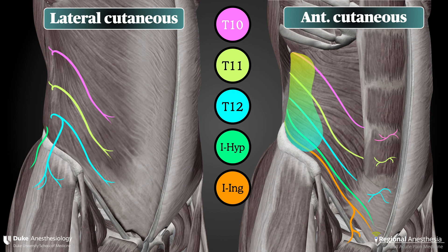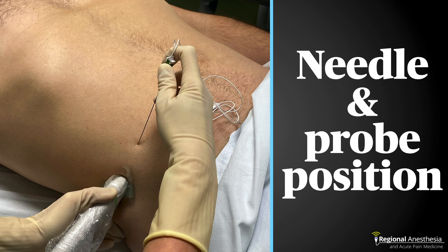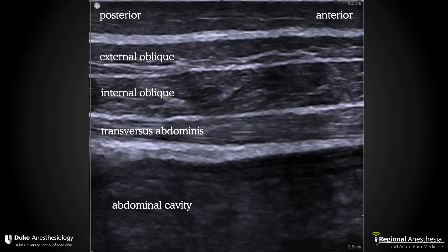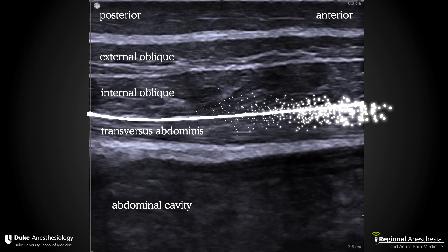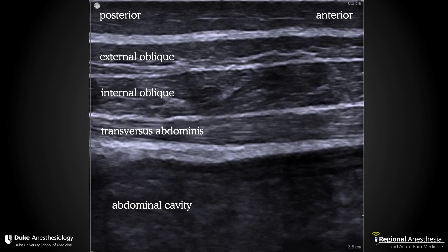The aim of the block is to deposit local anesthetic in the transversus abdominis plane. If we stay at or posterior to the midaxillary line, we'll be sure to catch the takeoff of those lateral cutaneous branches and ensure we'll cover both the midline and the lateral aspects of the lower abdomen. With the patient supine, the probe is applied to the midaxillary line between the iliac crest and the costal margin. A block needle is inserted in-plane from the anterior aspect and advanced to the target fascial plane. Here's a typical sonogram for the TAP block — note the three layers of muscle, with subcutaneous fat above and the abdominal cavity below.